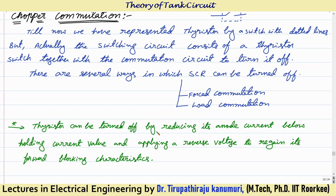The thyristor can be turned off by reducing its anode current below the holding current. As we discussed while discussing the thyristor characteristics, we have to decrease the current below the holding current, and after that we have to apply a reverse voltage for some time so that it can regain its forward blocking characteristics. After that only it can again block the forward voltage.